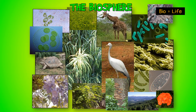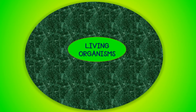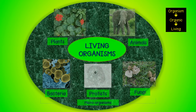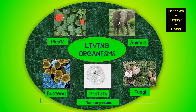The biosphere. The word 'bio' means living, so the biosphere consists of all living things. We refer to living things as living organisms — the word 'organism' comes from 'organic', which also means living. There are many kinds of living organisms such as plants, animals, and microorganisms. Microorganisms are very small and include bacteria, protists, and fungi.